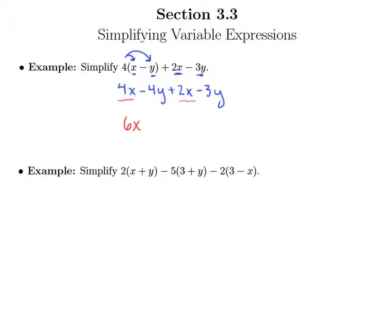I can do the same thing with my y terms. I have negative 4y — that's how we'd want to think about it because there's that minus sign in front. We can think about minus signs and negative signs interchangeably. So negative 4y minus 3y gives us negative 7y.